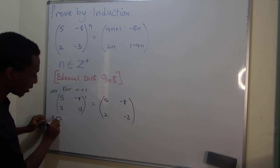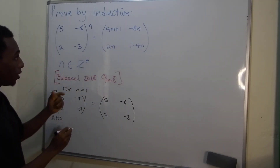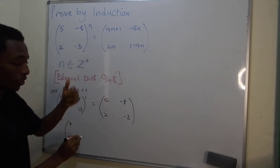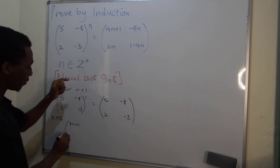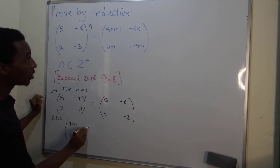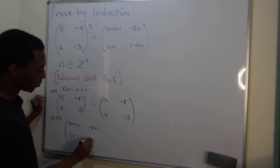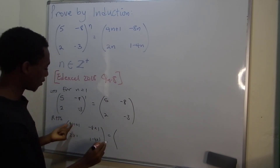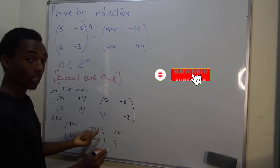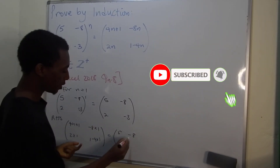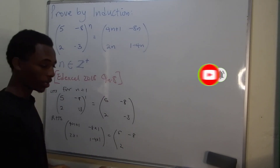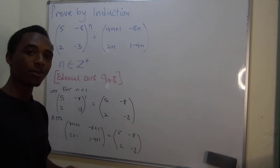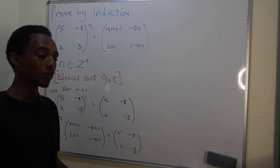Let's do this for the right-hand side. For n equals 1, that's going to be 4 times 1 plus 1, which is 5; -8 times 1, which is -8; 2 times 1, which is 2; and 1 minus 4 times 1, which is -3. So the right-hand side equals the left-hand side. This is true for n equals 1.